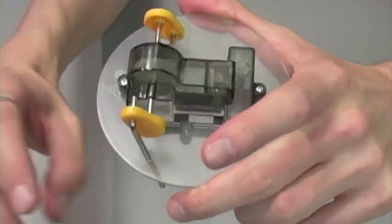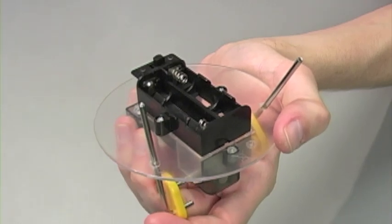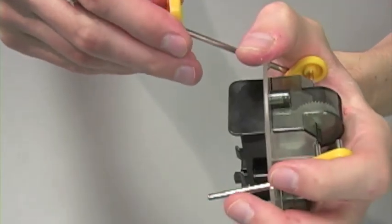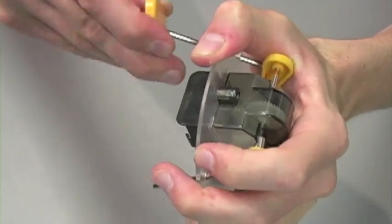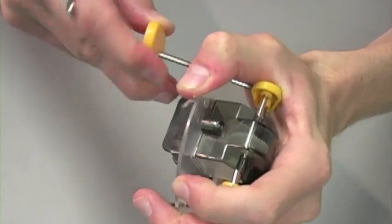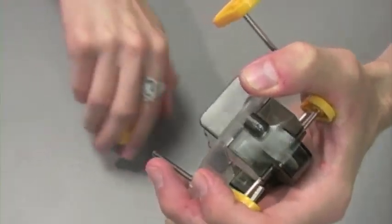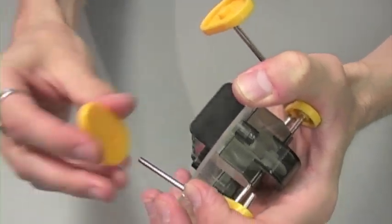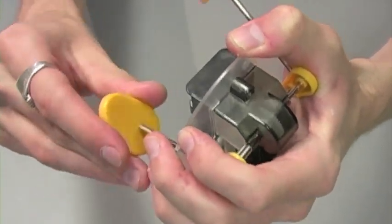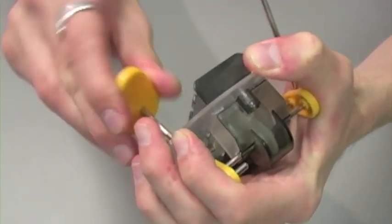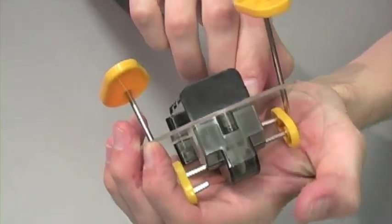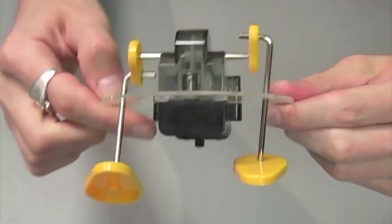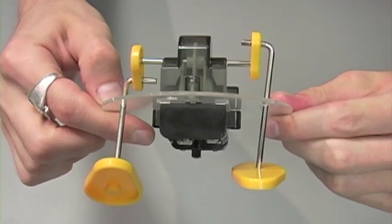Step six, easy peasy, you're going to take the two plastic feet provided, and push them onto the metal legs so that it looks like this. Step six complete.